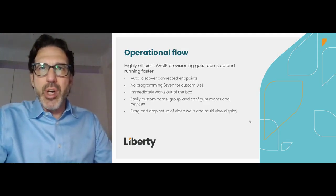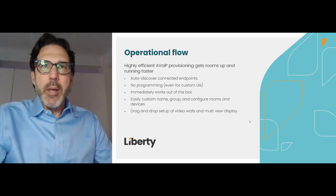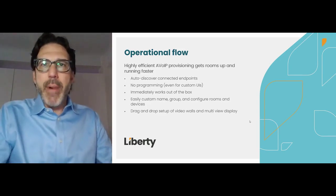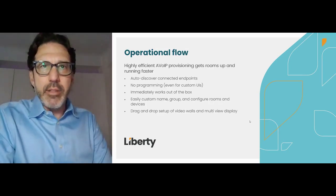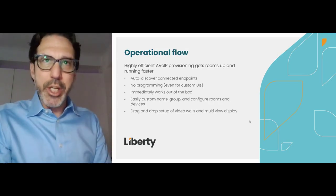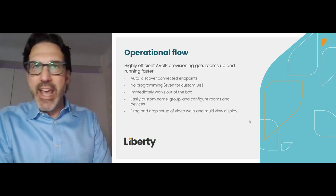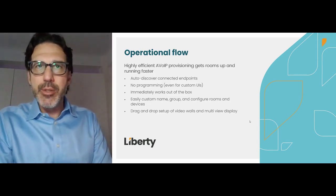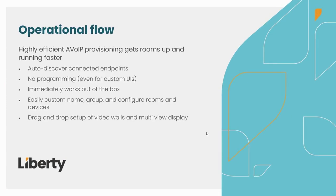AV over IP endpoints are auto-discoverable on the network and immediately provide basic functionality right out of the box without any configuration. Once connected and ready to use, you can easily name, group, and configure devices and rooms using simple text boxes. Setting up video walls and multi-view displays are done simply in a drag and drop window.